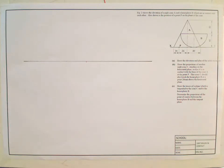1007 Solids in Contact. Shown is the elevation of a right cone A and a hemisphere B which are in contact with each other. Also shown is the position of a point P in the front of the cone. Draw the elevation and plan of the solids in contact.